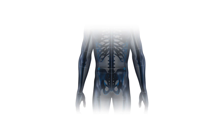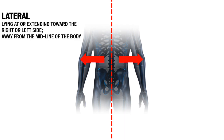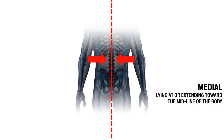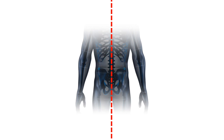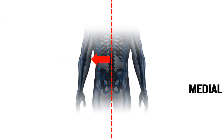These terms are relative to the midline of the body. Lateral means lying at or extending toward the right or left side, away from the midline of the body. Medial is lying at or extending towards the midline of the body. Look at the elbow for example. The outermost side, furthest away from the midline, is the lateral aspect of the elbow. The innermost, closer to the midline, is the medial aspect of the elbow.